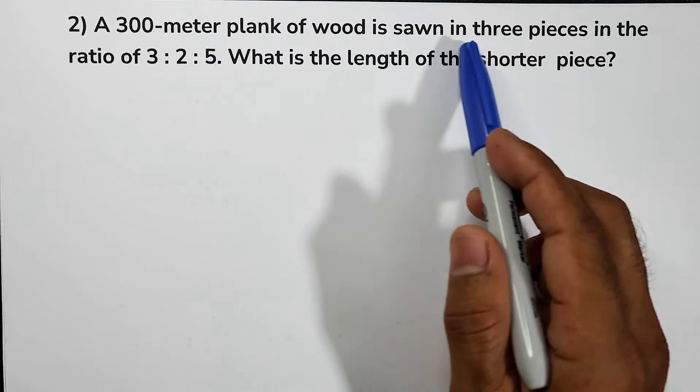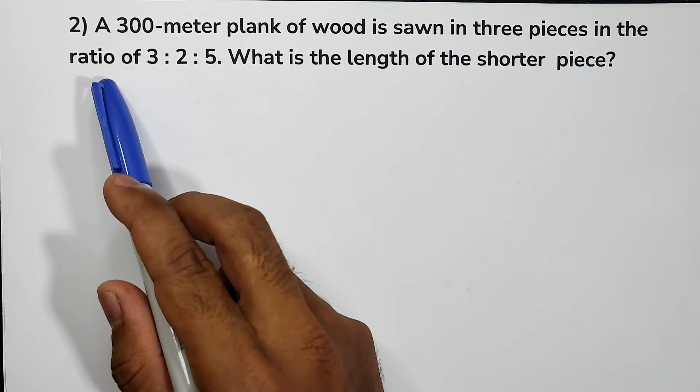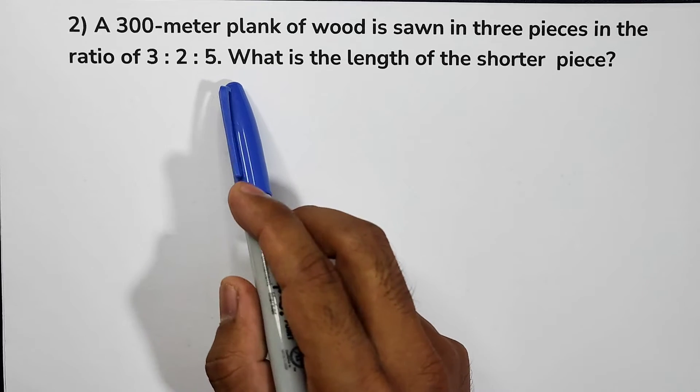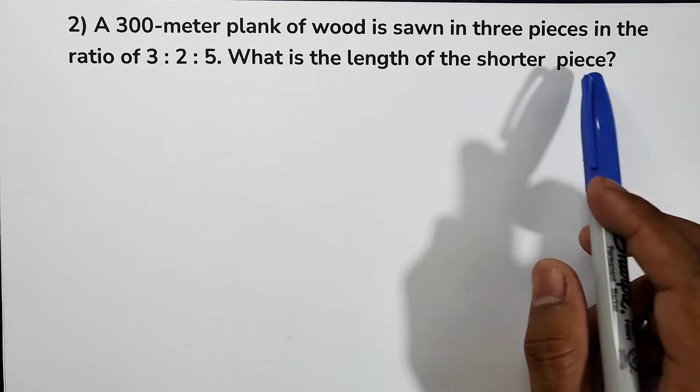A 300 meter plank of wood is sawn in 3 pieces in the ratio of 3 to 2 to 5. What is the length of the shorter piece?